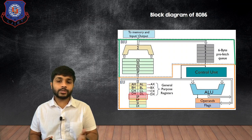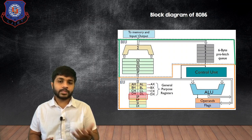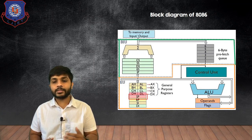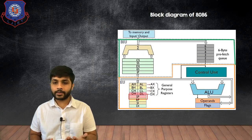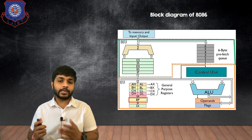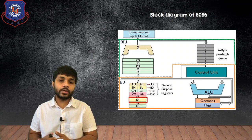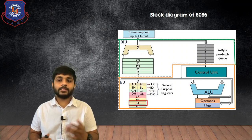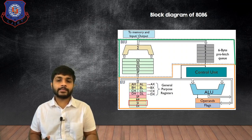The next registers are Stack Pointer, Base Pointer, Source Index, and Destination Index. The Stack Pointer is used to store the starting address of the stack. The Base Pointer is used to store the base address. Source Index and Destination Index are used for data movement operations.